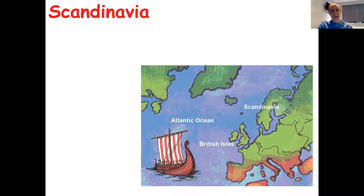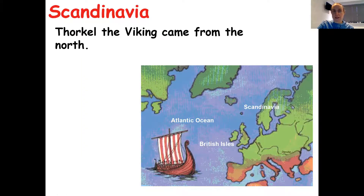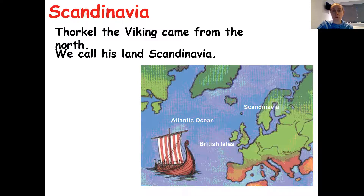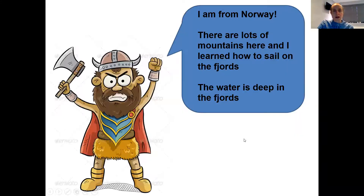Right, back to our Viking longships. There's a Viking called Thorkell — that's just for the sake of this PowerPoint. He came from the north, and we've already talked about the fact they came from Scandinavia, which are the countries of Norway, Denmark, and Sweden. You can see that they took their voyages across the seas, and one of the places they came to was the United Kingdom. Thorkell is a Viking from Norway, as some of them are from Norway, some from Denmark, some from Sweden.